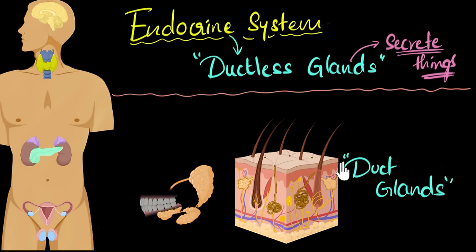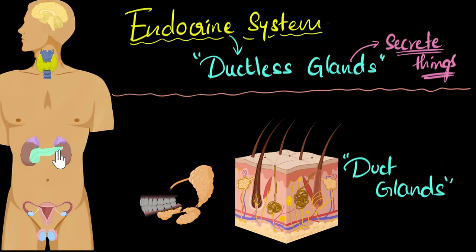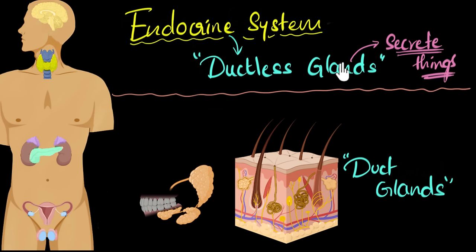Now in contrast, can you guess what ductless glands are? Well, these are the glands that do not have a duct. As you can see, the colored ones we're going to talk about — they don't have any ducts. So where do the secretions go? They secrete things directly into the blood, and it's the blood which takes those secretions to all the cells. It's these secretions done by the ductless glands which we call hormones.